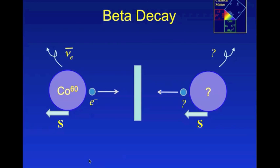Let's consider the example of beta decay, in which cobalt-60 emits an electron and an anti-neutrino. The electron is always emitted in the opposite direction of the nuclear spin, and the anti-neutrino is always right-handed.